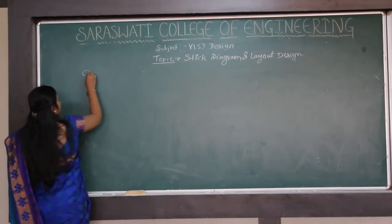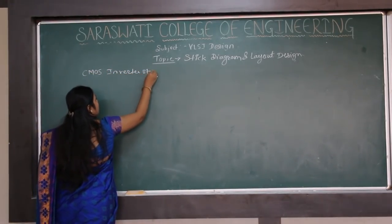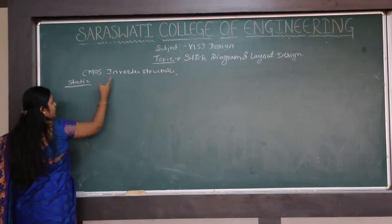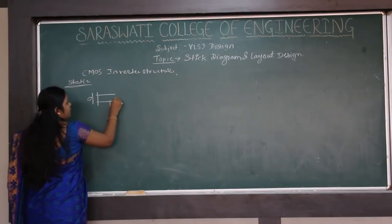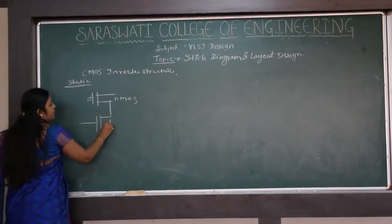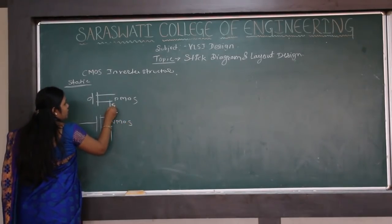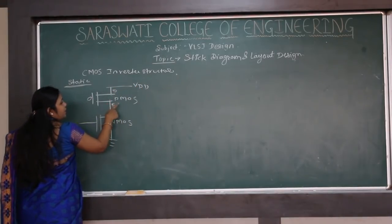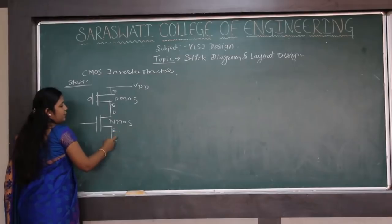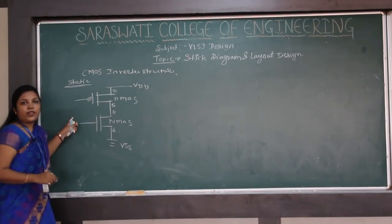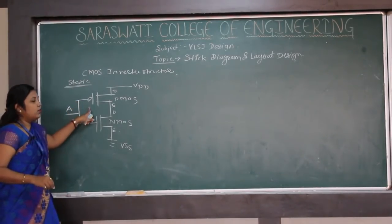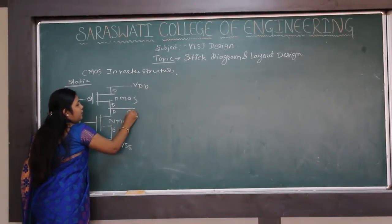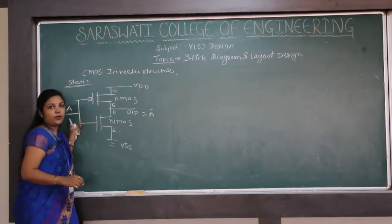We are going to start with the CMOS Inverter Structure. In a CMOS Inverter, one PMOS is connected in series with an NMOS, with the source of PMOS connected to the drain of NMOS. The drain of PMOS is connected to the VDD supply and the source of NMOS is connected to VSS. When the same input A is provided to both MOSFETs, the output is A-bar, which is the inversion of the input.